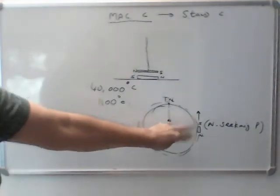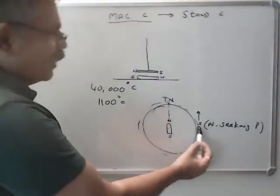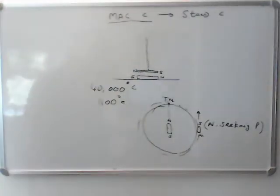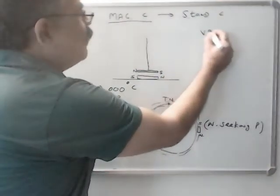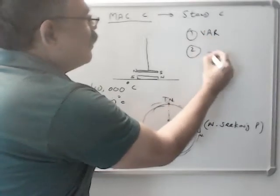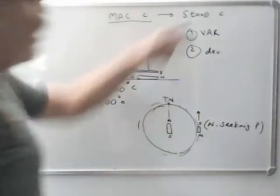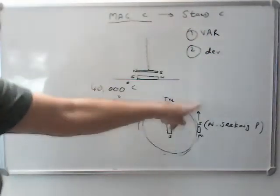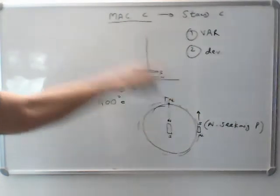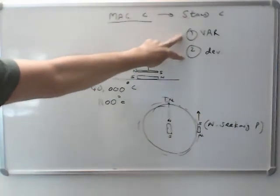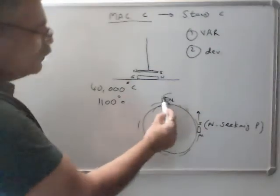Now this magnet has got two small errors, one is variation and one is deviation. So we have to calculate these errors, and whatever reading you get on the ship's magnetic compass, we have to apply these two errors, and then we get the direction of true north.